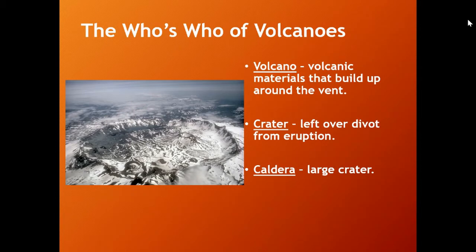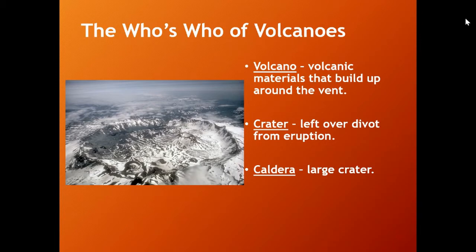A crater is a leftover divot from an eruption. Once the volcano is built up, typically magma will pool up underground, and when it erupts, the magma comes to the surface and leaves a space inside the Earth — that space drops down, giving you a little crater at the top. A caldera is the term used to describe a large crater. You see pictured here a caldera, and a smaller volcano near and inside the caldera with a crater on top of it.